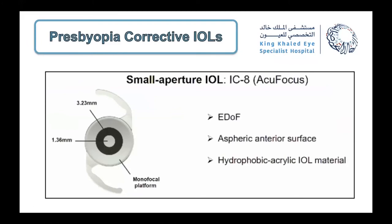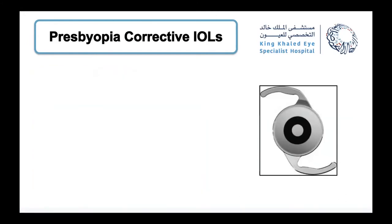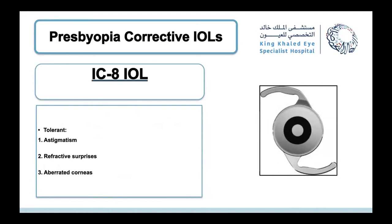A new type of EDOF worth mentioning is the IC8, also known as AcuFocus or small aperture IOL. It is a pinhole lens inserted in the non-dominant eye — a form of monovision. It features an anterior aspheric surface and hydrophobic acrylic material. The recommended target when implanting is minus 0.75 diopters. It provides very good near vision. One concern is decentration from the natural pupil position, which may deteriorate optical quality. This lens is very tolerant to astigmatism, refractive surprises, and aberrated corneas.